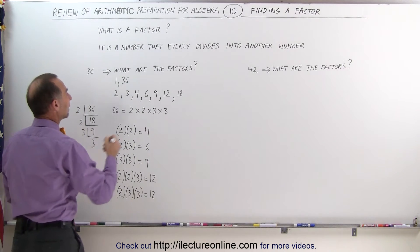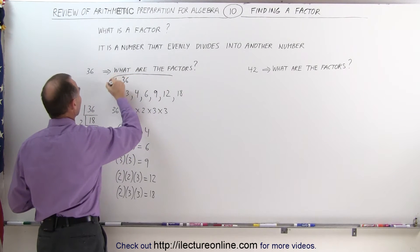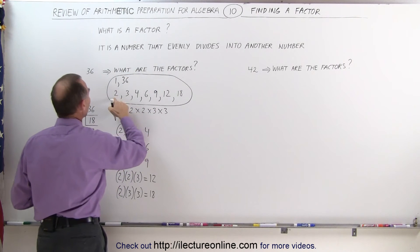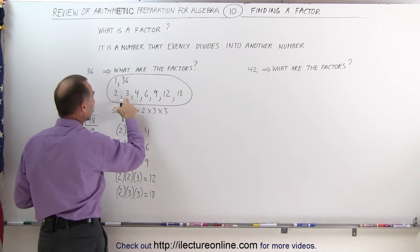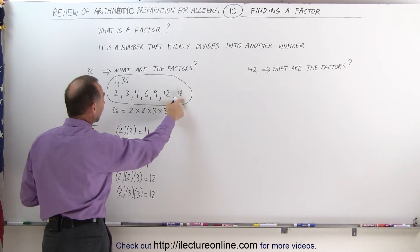It turns out then that all the factors of 36 together are the numbers 1, 2, 3, 4, 6, 9, 12, 18, and 36.